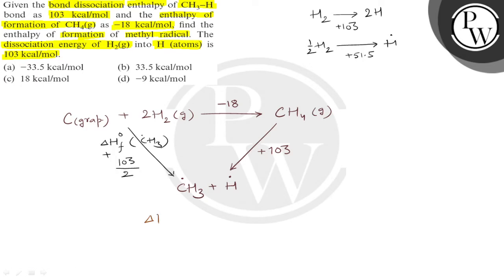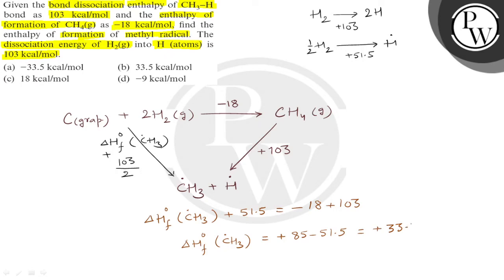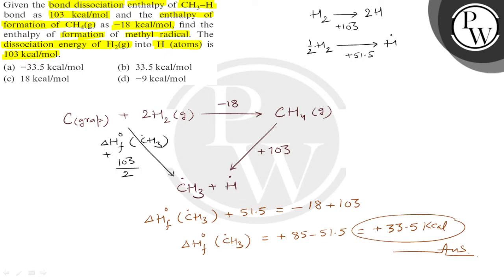Hess's law says that delta H0 formation of CH3 free radical plus 51.5 kilocalorie equals minus 18 plus 103 kilocalorie. So, what should be delta H0 formation of CH3 free radical? It should be plus 85 minus 51.5, which gives us plus 33.5 kilocalorie. This should be the final answer: plus 33.5 kilocalorie.